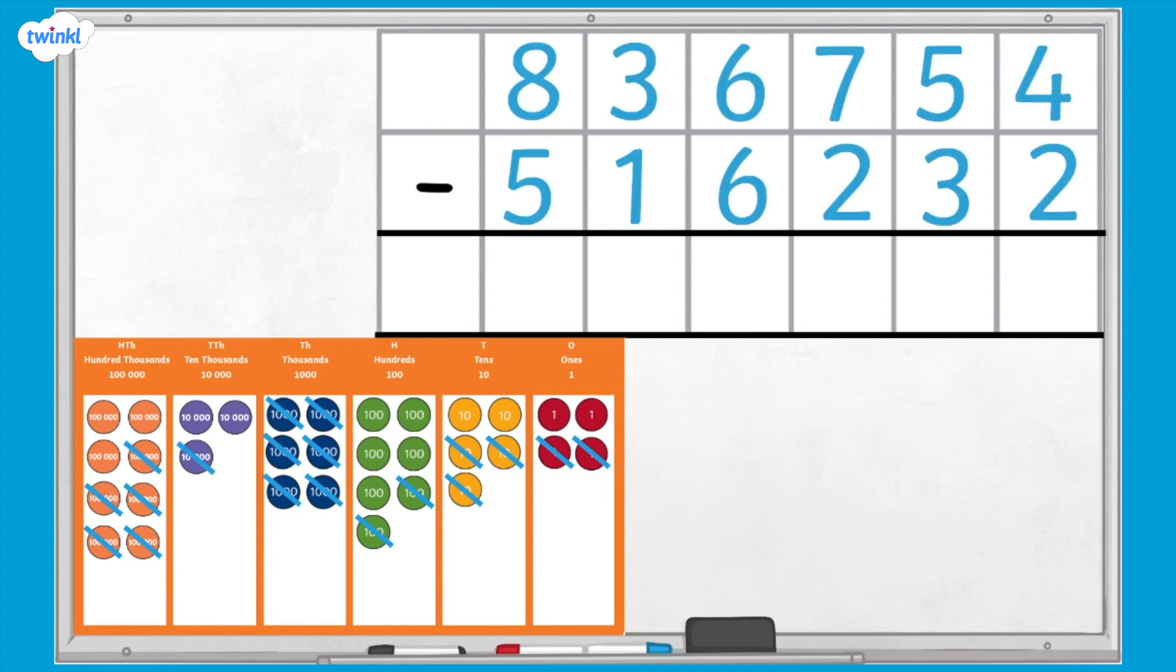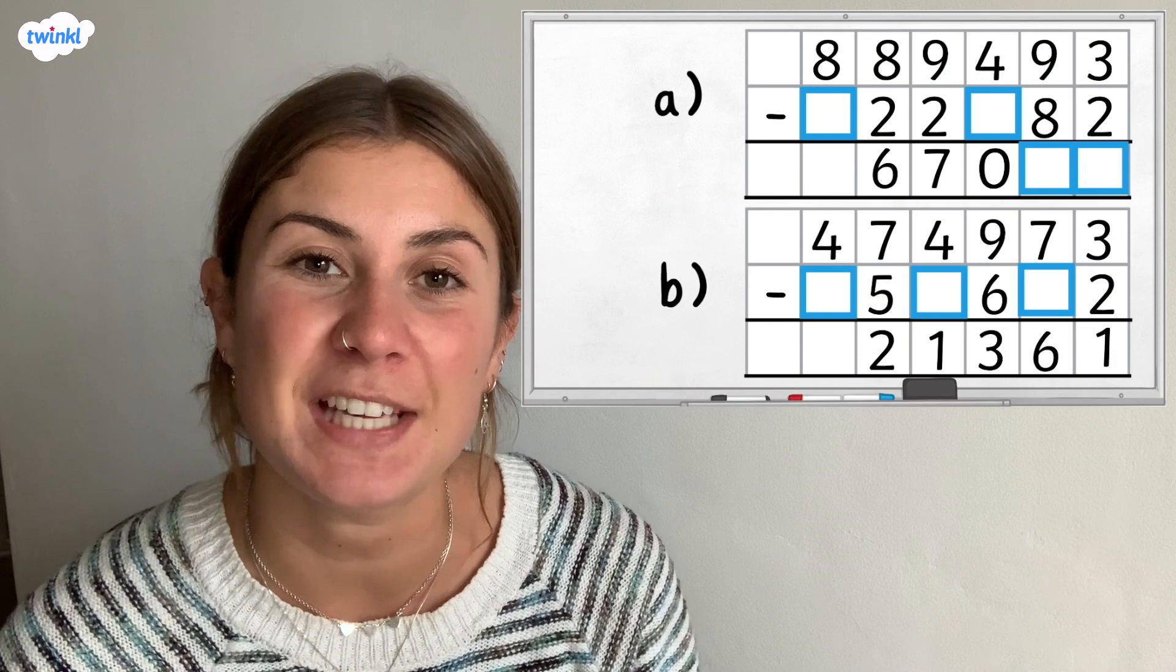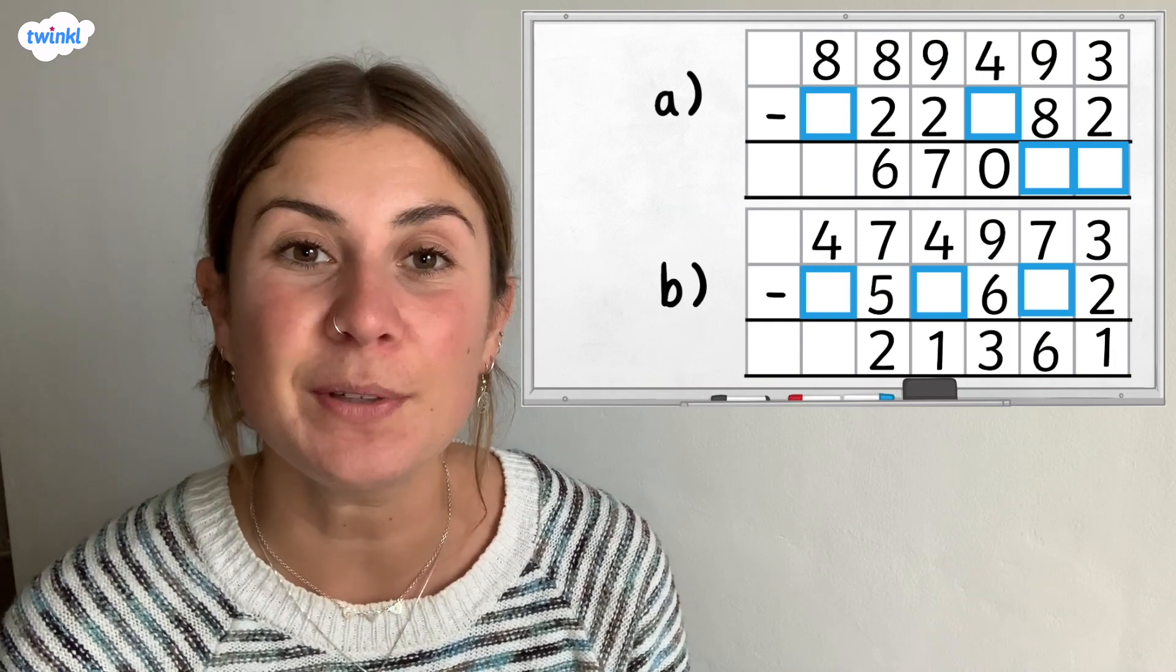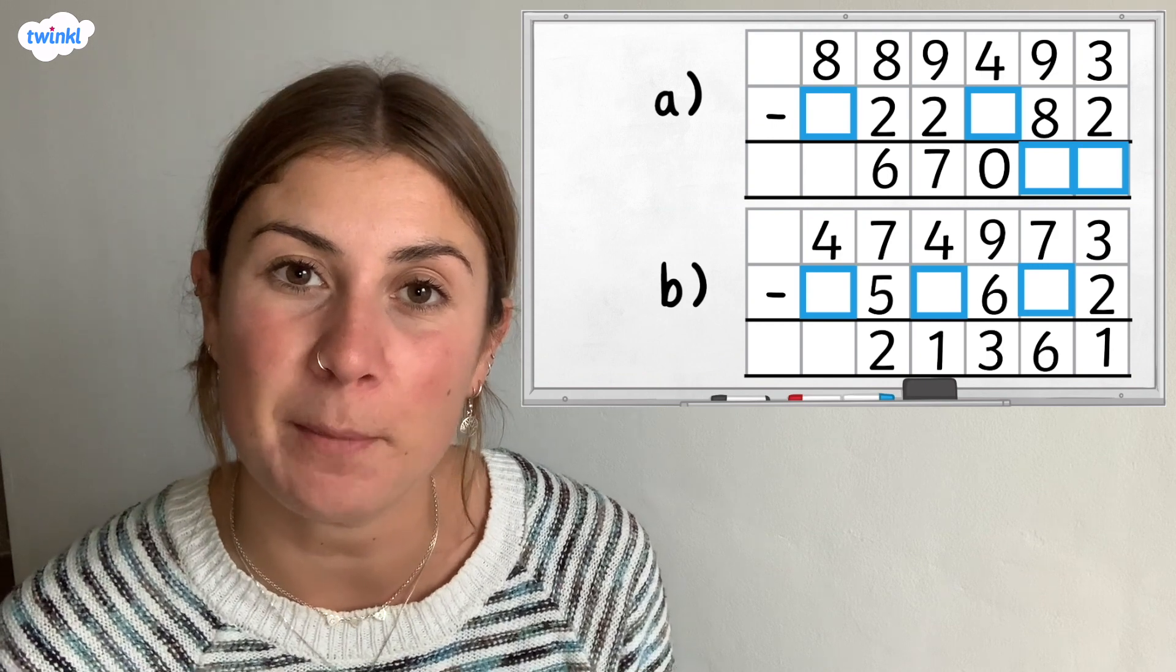Does the answer to your column subtraction match the place value counters left on the place value grid? For your last challenge I'd like you to carefully look at these column subtraction questions. Can you calculate which numbers belong in the blank boxes? Pause the video here to have a go.